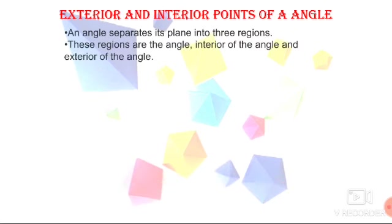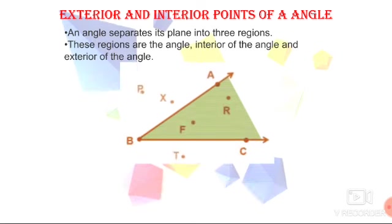Next we will study about interior and exterior points of an angle. An angle is mainly divided into three regions: angle, interior of the angle, and exterior of the angle. In the given figure, the angle is named as angle ABC. Interior of the angle is the region inside the angle, the shaded portion here. Two points are lying in this: point F and point R. Exterior is outside the angle.